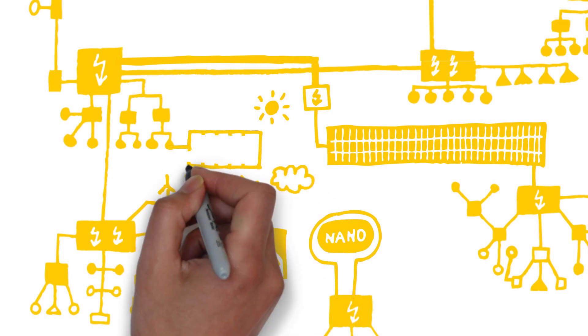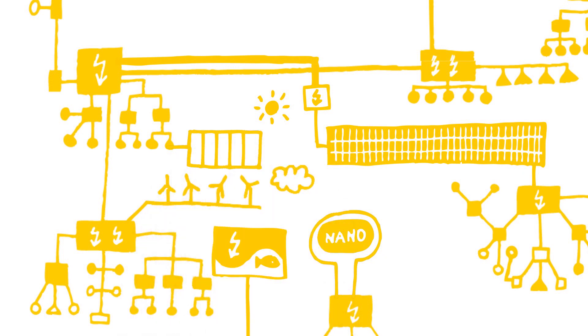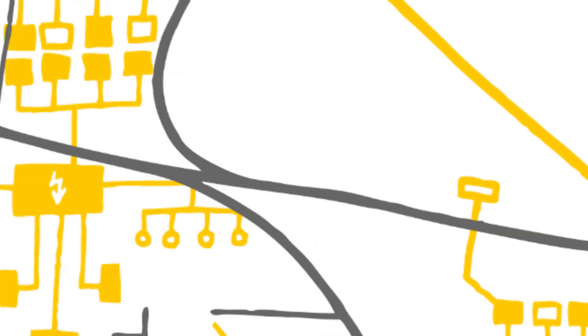We also see big ideas like using the Sahara for large-scale electricity production through concentrated solar power plants. To complicate matters further, technological progress in one domain typically co-evolves with technological innovation in other domains.